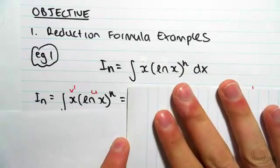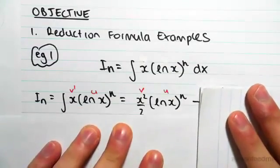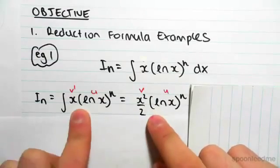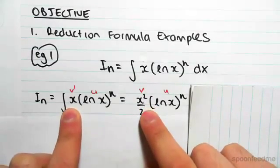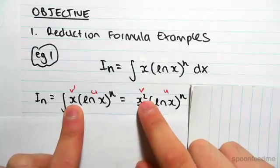So using the integration by parts formula, the first thing we're going to find is vu or uv. So v' is x, we have to integrate that to get to v, so we get x^2/2.